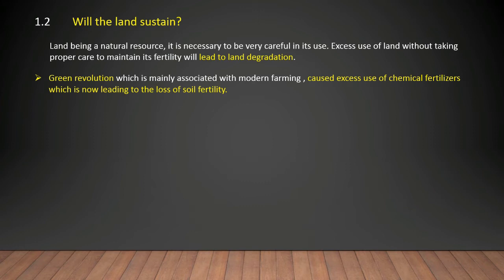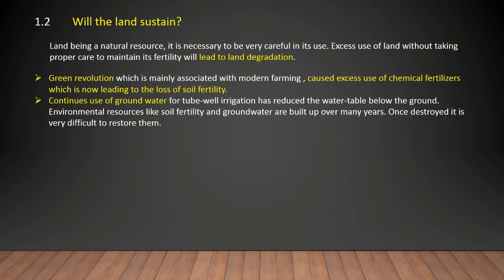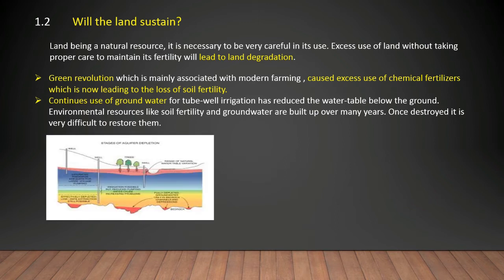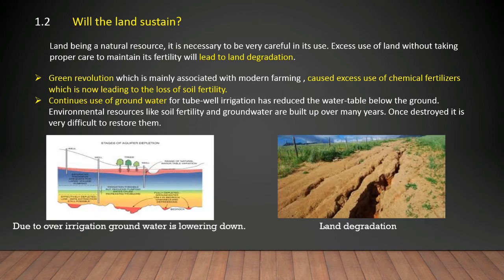The Green Revolution, mainly associated with modern farming, causes excess use of chemical fertilizers which is leading to loss of soil fertility. Continuous use of groundwater for tube well irrigation has reduced the water table below the ground. Environmental resources like soil fertility and groundwater are built up over many years; once destroyed, it is very difficult to restore them. Excess use of land through modern farming methods leads to land degradation and lowering of the groundwater level.